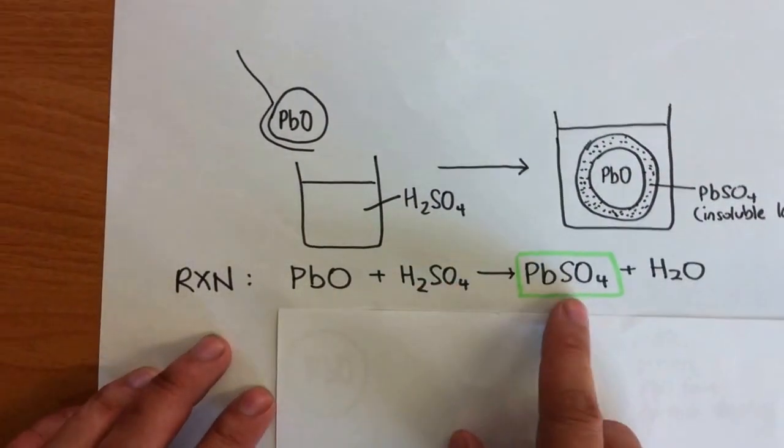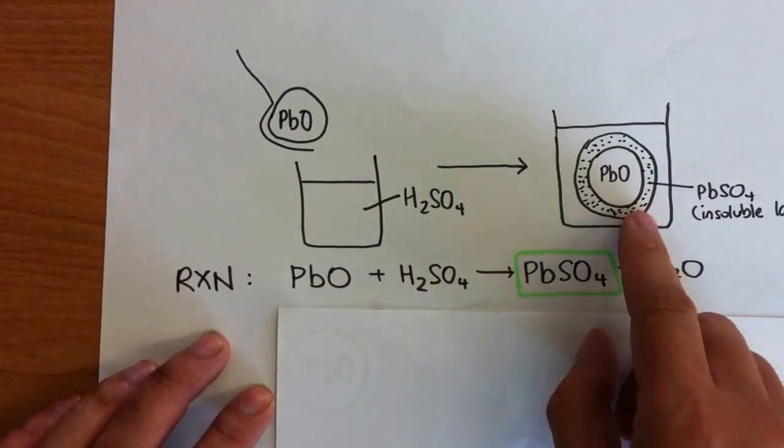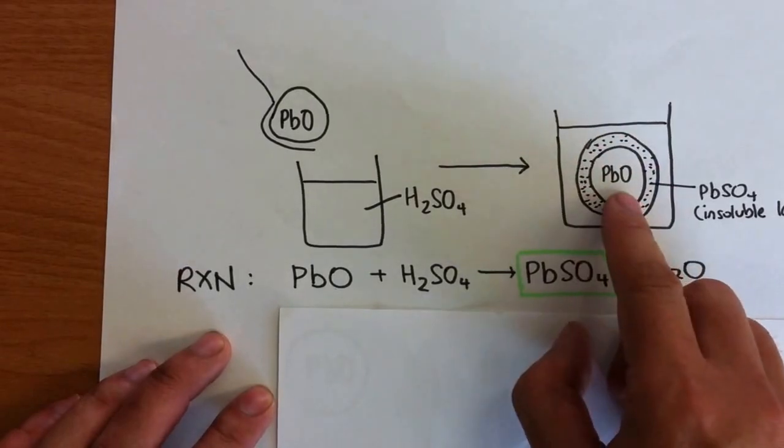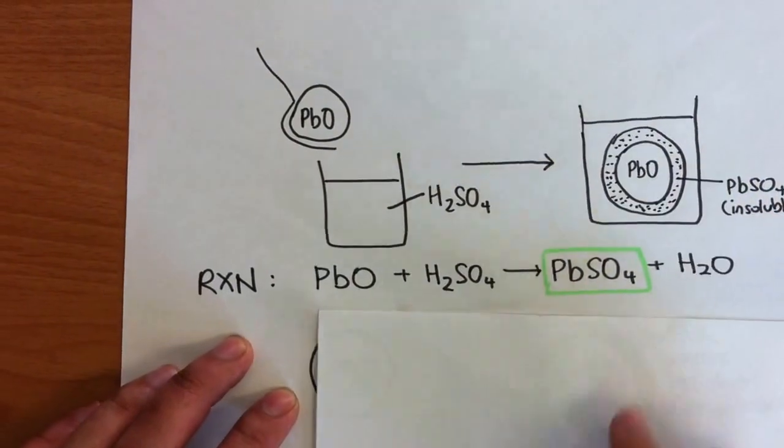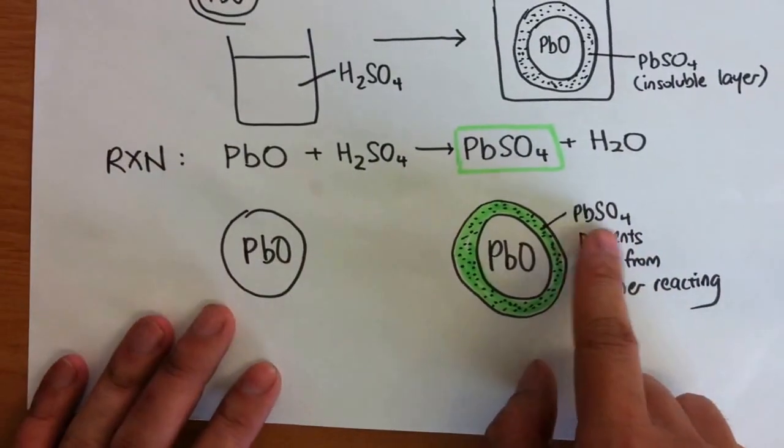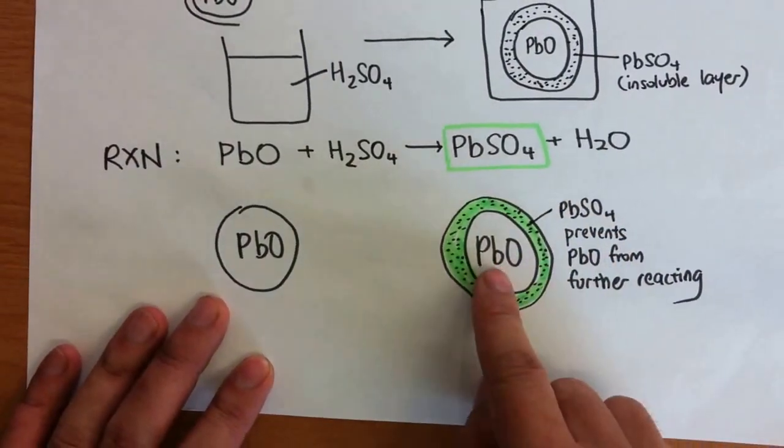So you get a reaction like that. The complication comes in this form. The outer layer of the PbO will react with the acid, and what happens is you will get an insoluble layer of PbSO4. The PbSO4 insoluble layer will prevent further reaction.